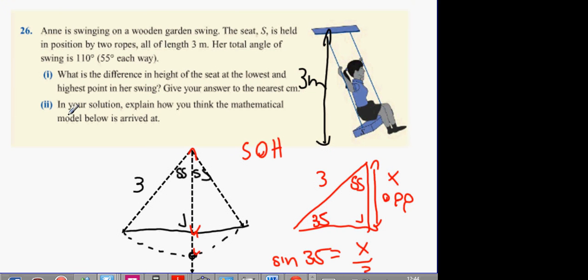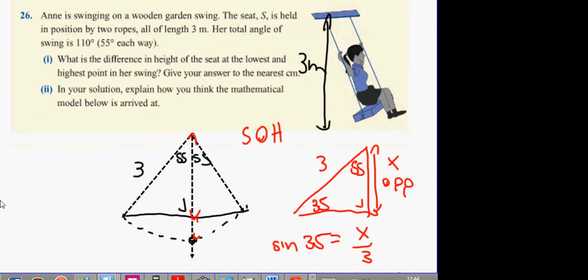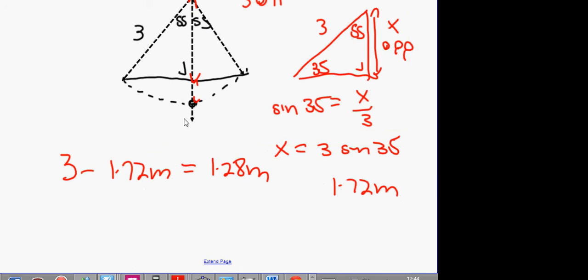Next part. In your solution, explain how you think the mathematical model is arrived at. That's an unusual question. In your solution, explain how you think the mathematical model is arrived at. So, how did you come up with this idea for solving the problem?